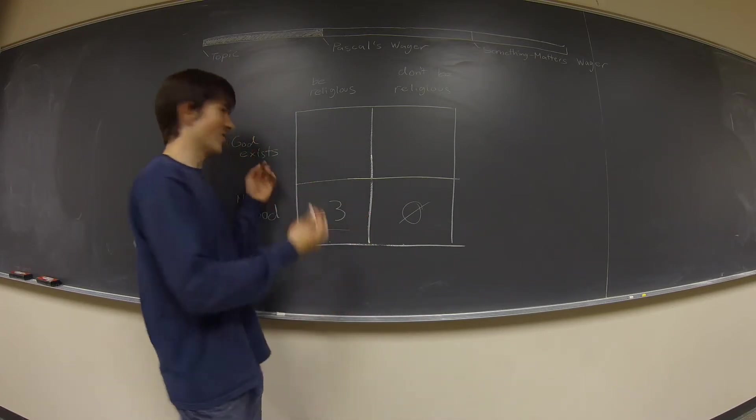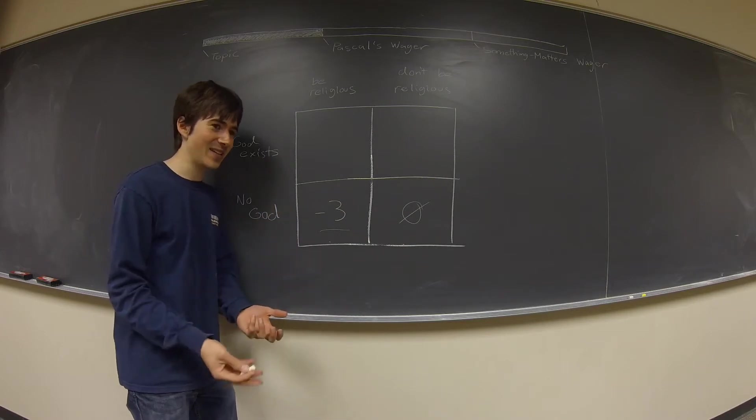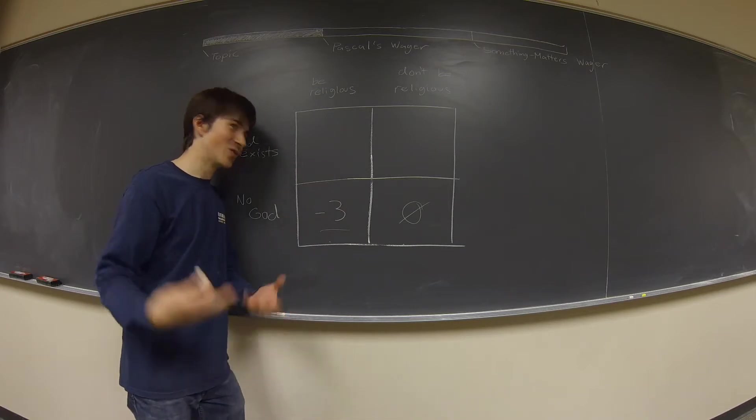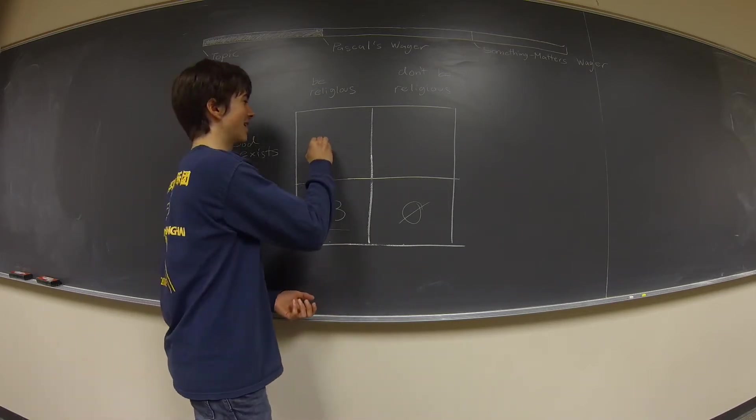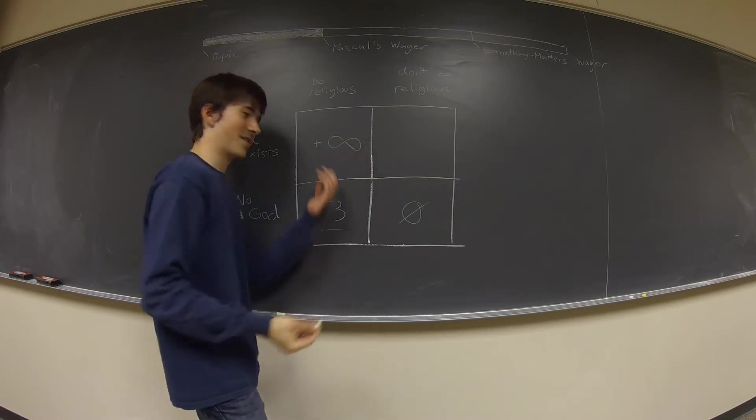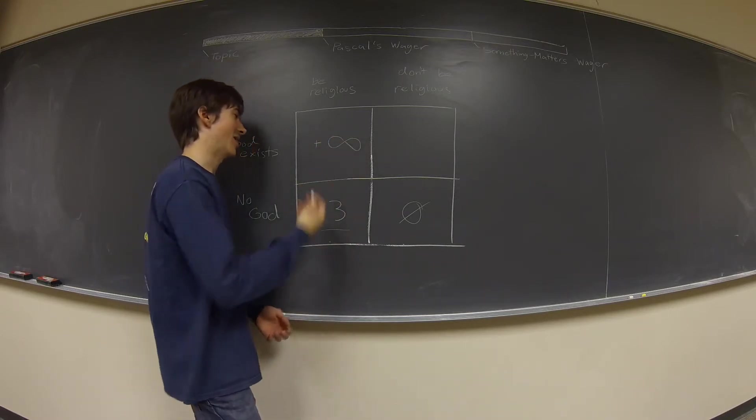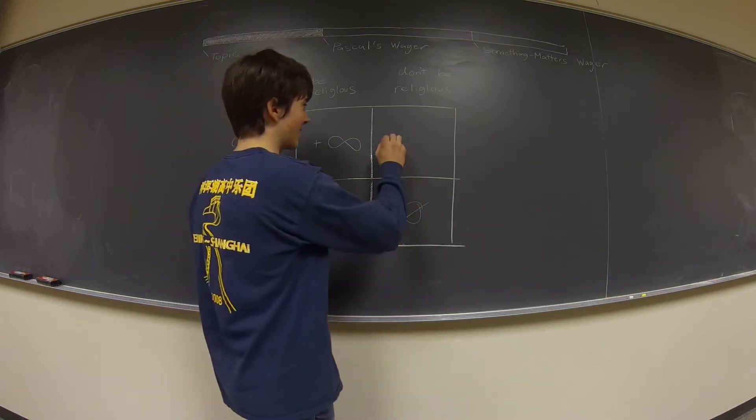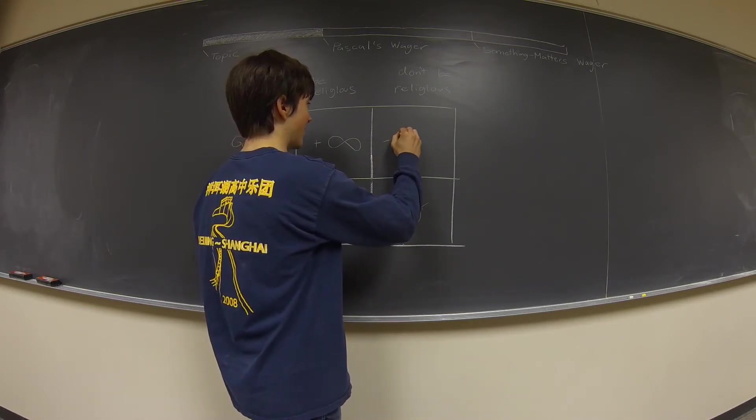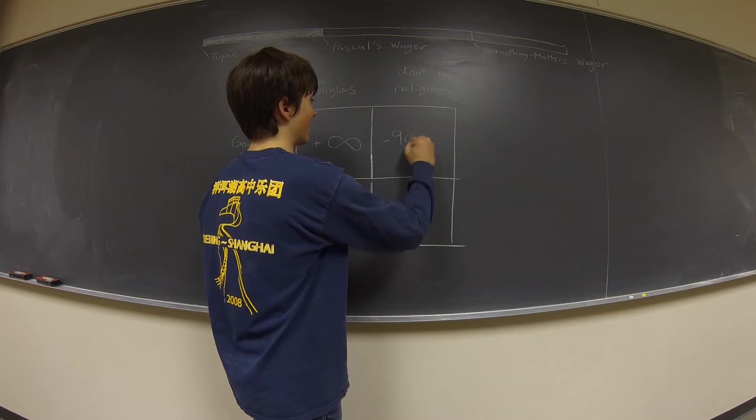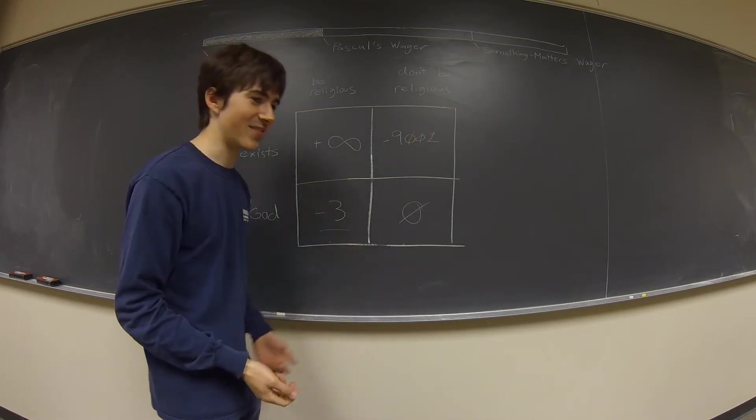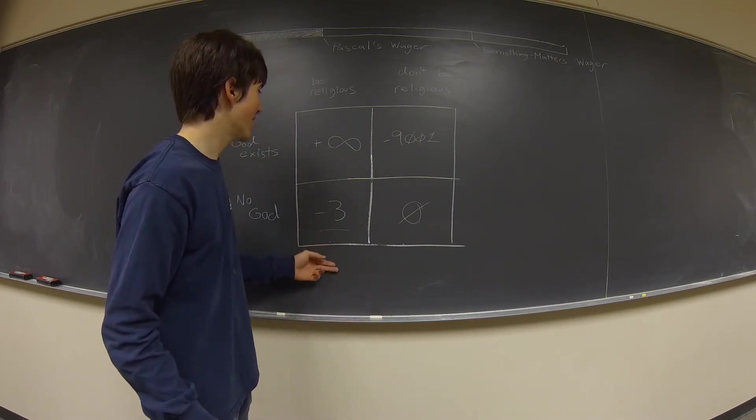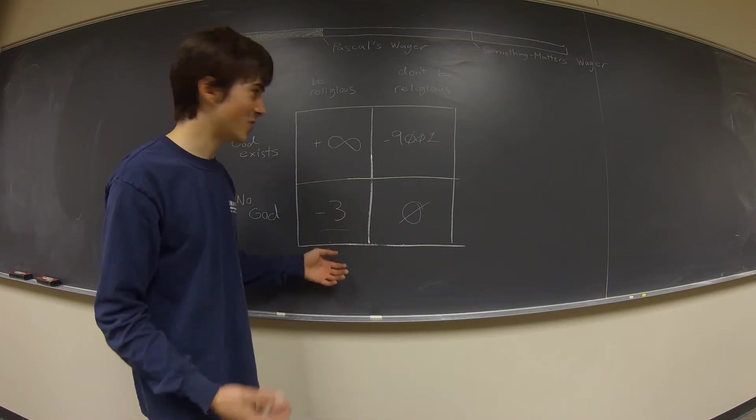Similar to not losing a dollar in our previous example. So no net difference. Okay. But let's say it turns out God is real. The religious folks were right. And you did go to church and you did live by the Bible and all that. So presumably you go to heaven. So that's like positive infinity. That's about as good as you can get. Okay. And if you're not religious, then you don't go to heaven. So you could say that's some large negative number, like 9,000. You could maybe say it's negative infinity. Up to you. The point is the same. If you add them down, this column is much better than this column.